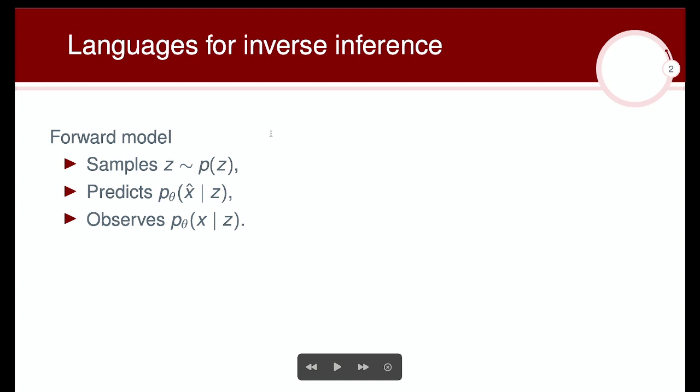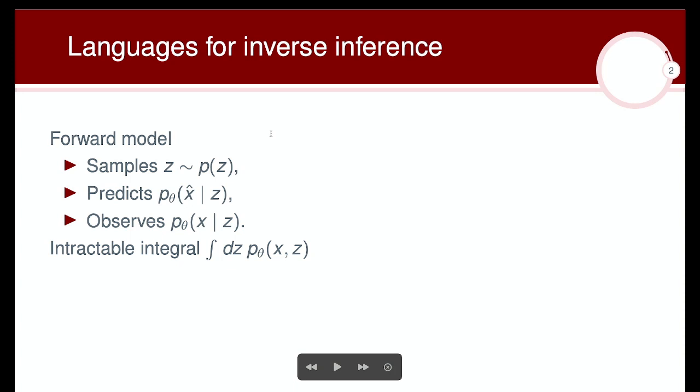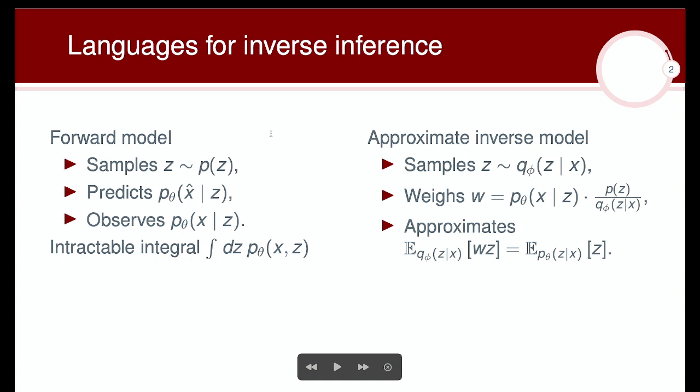A language for inference is often a language for inverse inference. We want to set up a probabilistic model in which we sample an unobserved variable, make some prediction about data, observe data that we can compare to the prediction, and then use the inverse probability rule, or Bayes' law, to get a posterior distribution. Unfortunately, that tends to involve solving an analytically intractable integral, can't necessarily be done in closed form, and so in practice, what we end up doing is writing an approximate inverse model.